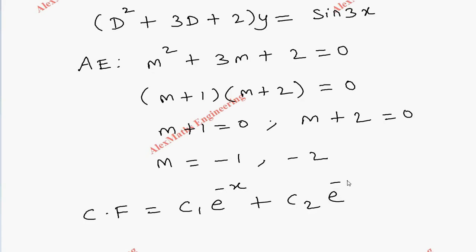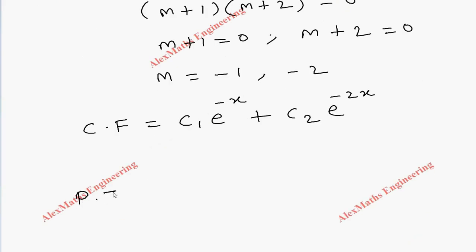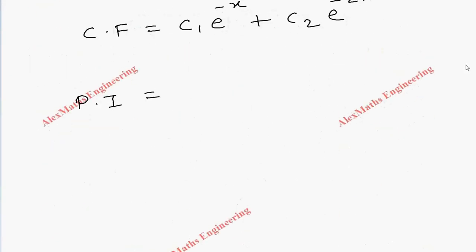Now coming to the particular integral, on the right-hand side we have sin(3x). So sin(3x) divided by D² + 3D + 2.